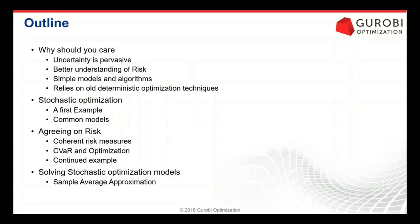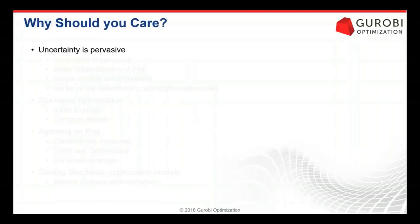Let's start with why should you care. Uncertainty is really pervasive. If you think of all kinds of applications like energy — nowadays, if you are doing energy planning, you know that the rain patterns, the winds, and the sun are really important and decisive when you are doing planifications on energy, income, and consumption too.